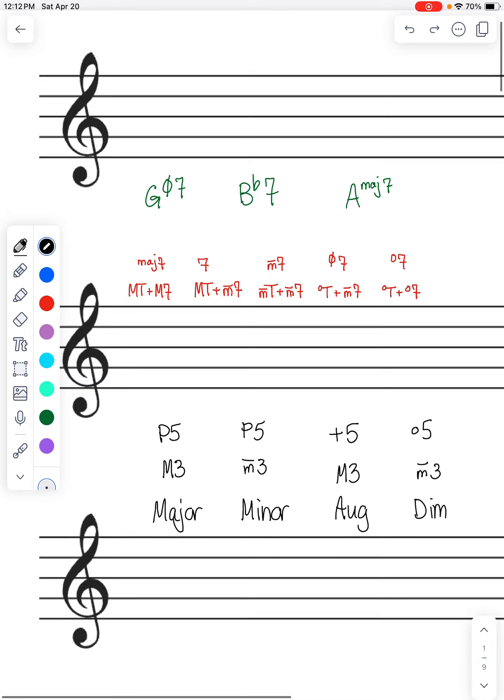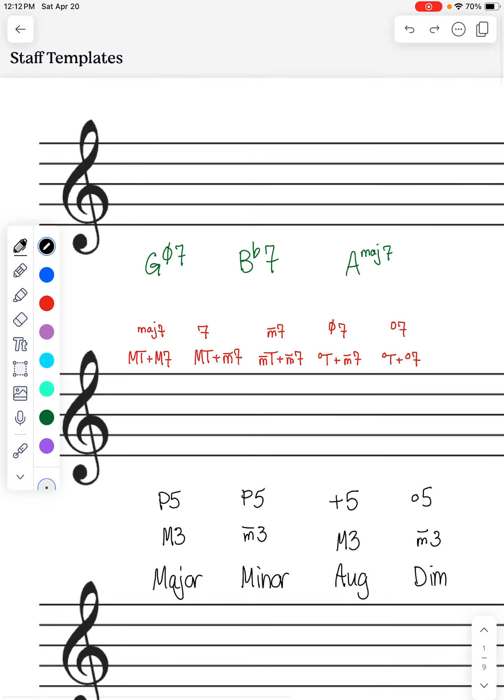All right, then let's do some in treble clef. We've got G-half diminished 7. So first, let's put our G. In our major scale, we would normally have G-sharp. So this is a perfect 5th and a major 3rd, but we need a diminished triad. So we're going to lower that 5th and we're going to lower that 3rd.